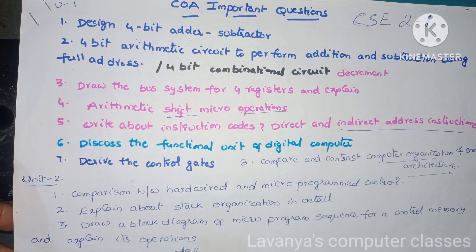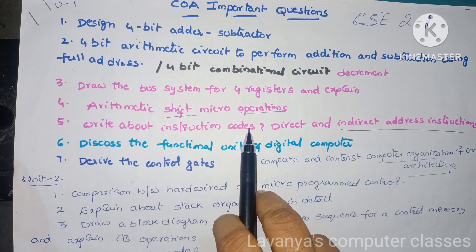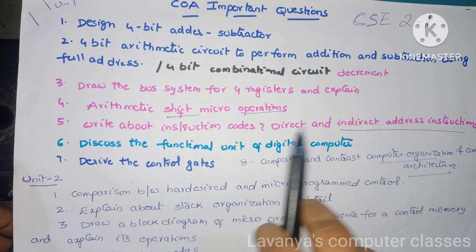First question is: design a 4-bit adder/subtractor. Second one is: design a 4-bit arithmetic circuit to perform addition and subtraction using full adder, and also explain 4-bit combinational circuit decrement. Next one is: draw the bus system for four registers and explain — important question. Next one is: explain about arithmetic shift micro operations — very very important question. And next one is: write about instruction codes, that is direct and indirect address instructions — important question.